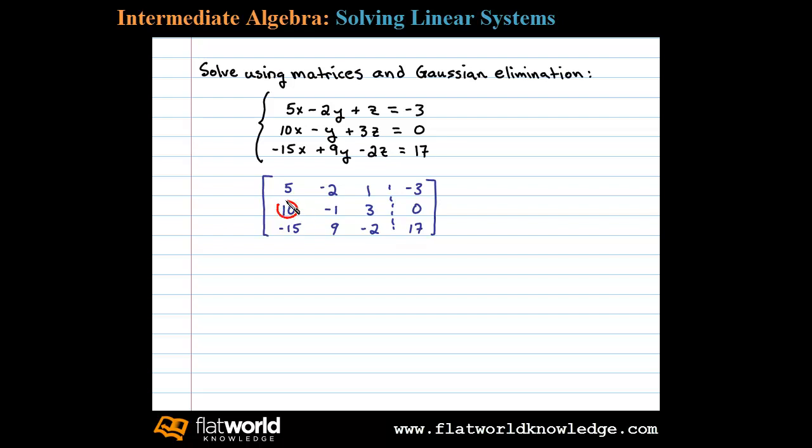To replace this first element of the second row with a zero, let's multiply the first row by negative 2. That'll leave us with negative 10, 4, negative 2, and 6.